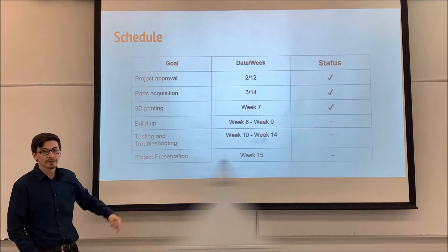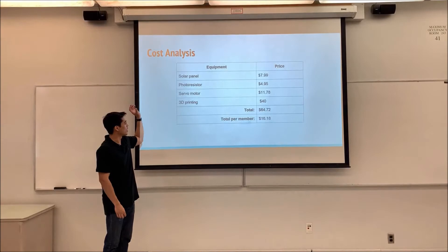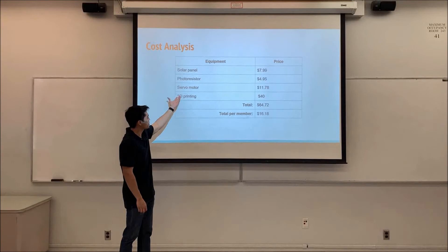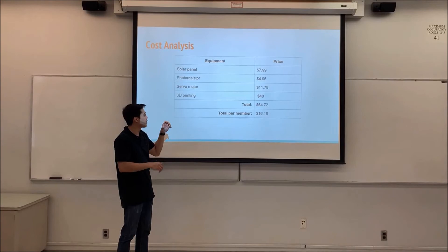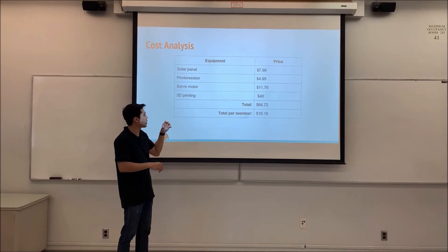So then this is our cost analysis. We pretty much got all our parts from Amazon. The solar panel right here was around $8. The photoresistors came in a 30-pack, was about $5. Our servo motors came in a 5-pack, so we're only using two of them. Came out to $11.78. The 3D printing came out to $40. So in total, it was $64.72. Divided amongst the four of us, it's $16 per person.